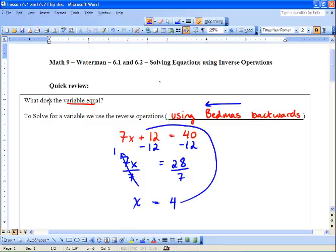Now you can put this variable back in and you can say, 7 times 4 is 28 plus 12 is 40. So yes, it works out.